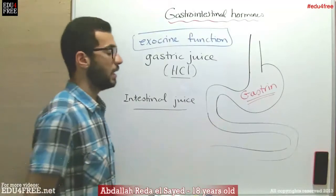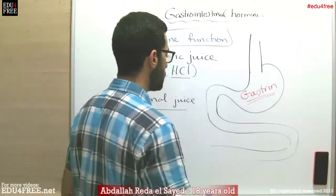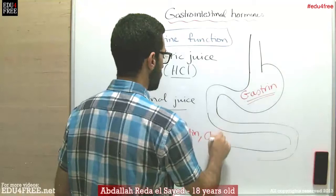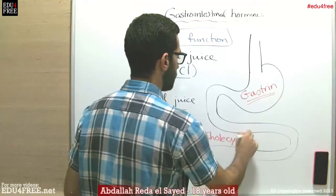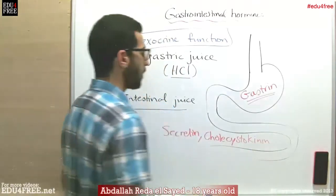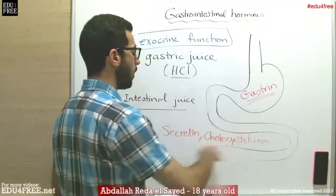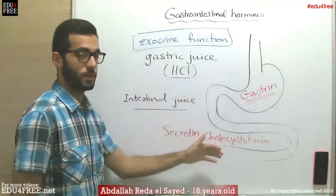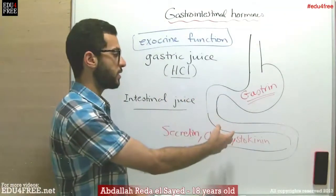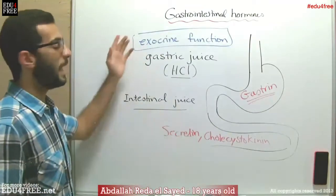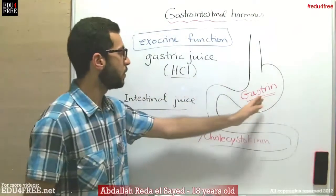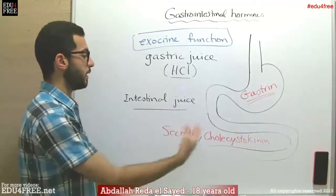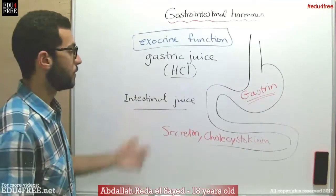The hormones produced in the intestinal regions are called secretin and cholecystokinin. All of these hormones stimulate the production of gastrointestinal juices. In other words, the endocrine function of the gastrointestinal region stimulates the exocrine function. When gastrin is produced, it stimulates the production of more gastric juice. When secretin and cholecystokinin are produced, they stimulate the production of more intestinal juice.